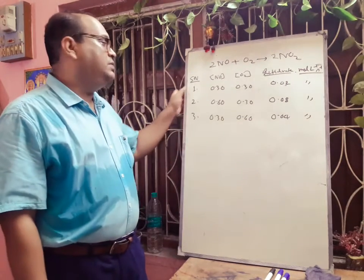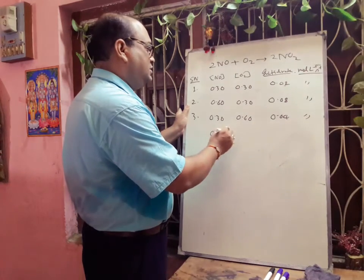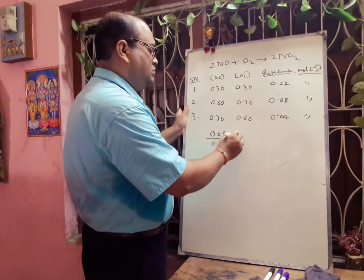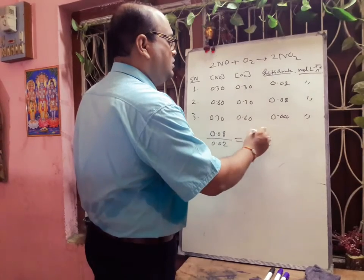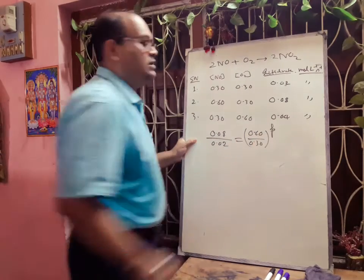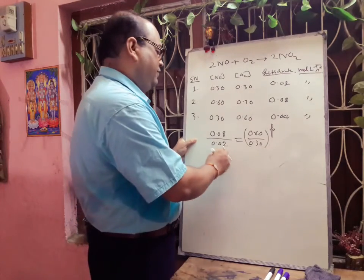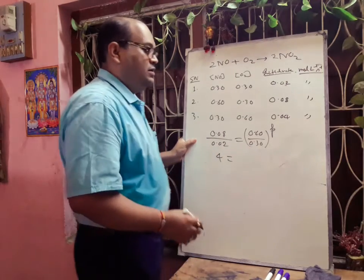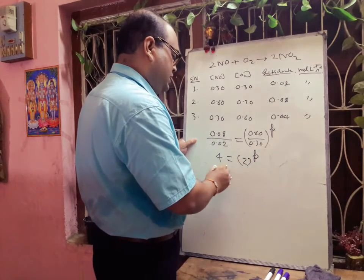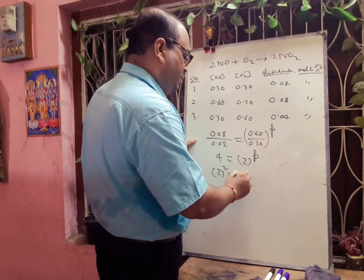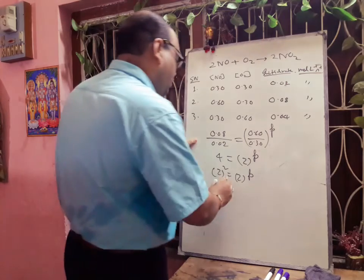From experiments 1 and 2: 0.08/0.02 equals (0.60/0.30)^p. This gives 4 equals 2^p, so 2² equals 2^p, therefore p equals 2. The order of reaction with respect to NO is 2.